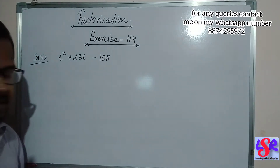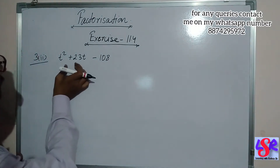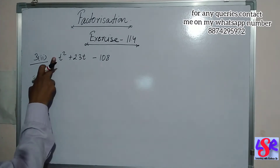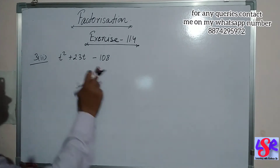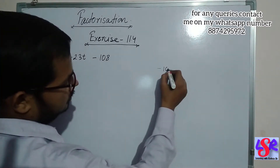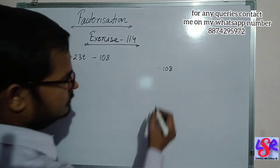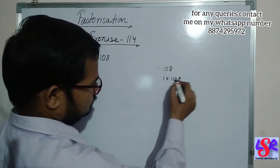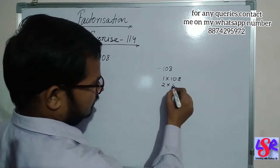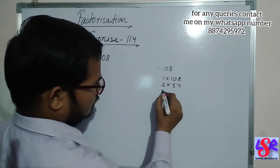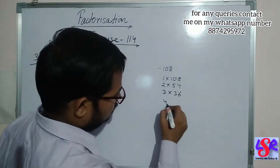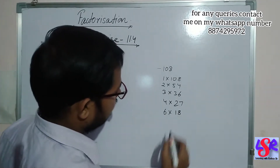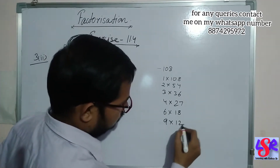Now let's go with question number three, second part. Here we are having t square plus 23t minus 108. The product of the coefficients gives minus 108. The factors are 1 into 108, 2 into 54, 3 into 36, 4 into 27, 6 into 18, and 9 into 12.